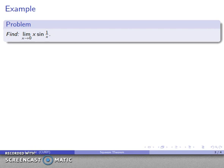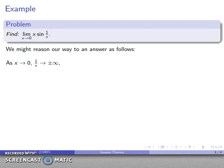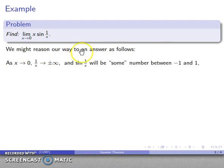Here's an example. Suppose I want to find the limit as x goes to 0 of x times sine of 1 over x. We don't actually need the squeeze theorem for this. As x gets close to 0, 1 over x is going to get close to plus or minus infinity. So sine of 1 over x will be the sine of a very large positive or negative number, and all we can say is that it's going to be some number between minus 1 and 1. Sine of 1 over x has no limit as x goes to 0.